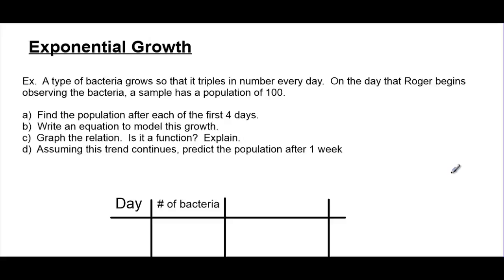Let's explore a very unique relationship in math called exponential growth, and to do that we're going to look at an example. A type of bacteria grows so that it triples in number every day. On the day that our friend Roger begins observing the bacteria, a sample has a population of 100. So here's what we want to find.